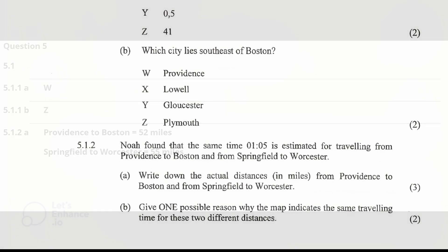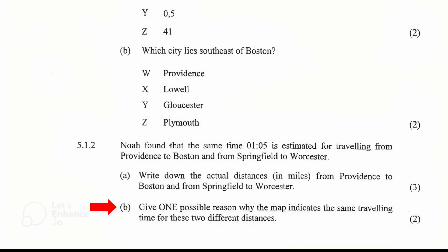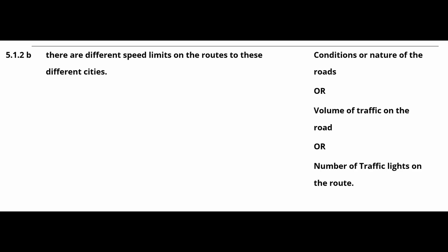5.1.2(b): Give one possible reason why the map indicates the same traveling time for these two different distances. One reason could be that there are different speed limits on the routes to these different cities. Other acceptable answers include: conditions or nature of the roads, volume of traffic on the road, or number of traffic lights on the route.